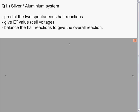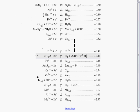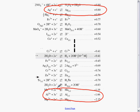Okay, predict the two spontaneous half-reactions. I have a portion of the table here. We have a silver-aluminum system, so here is the silver reaction and the aluminum reaction is down here.